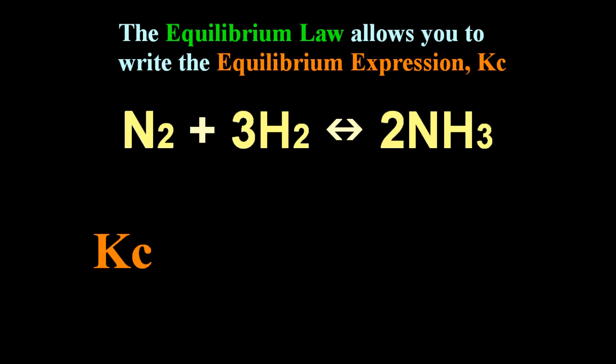Capital K means equilibrium constant, and the c means chemical. Confused already? Well, this bit's easy.